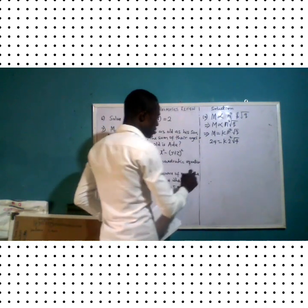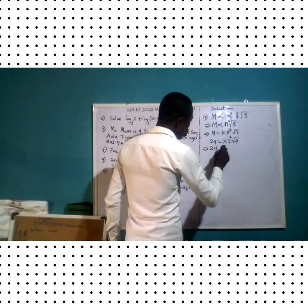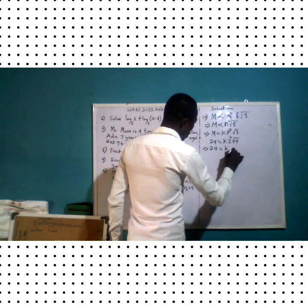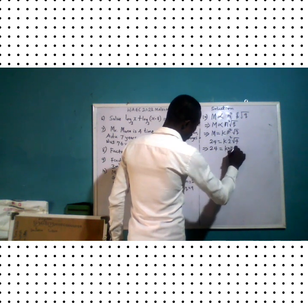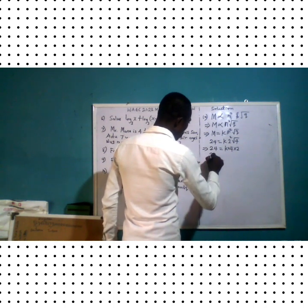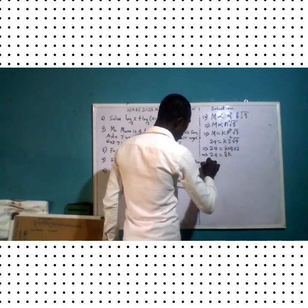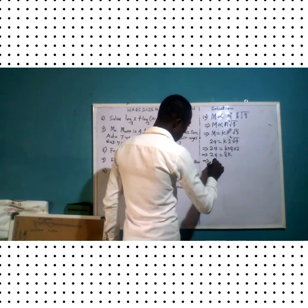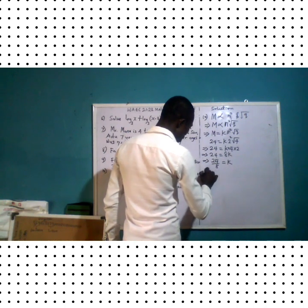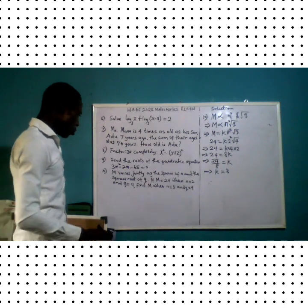Finding k first: substituting gives 24 equals k times 4 times the square root of 4. The square root of 4 is 2, so 2 times 4 equals 8. Therefore 24 equals 8k, which means k equals 24 over 8, so k equals 3.